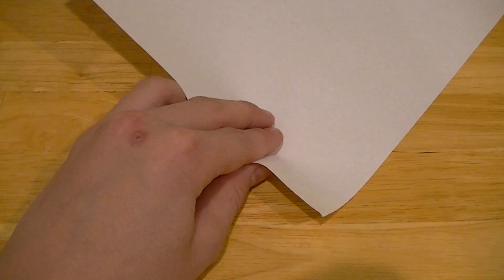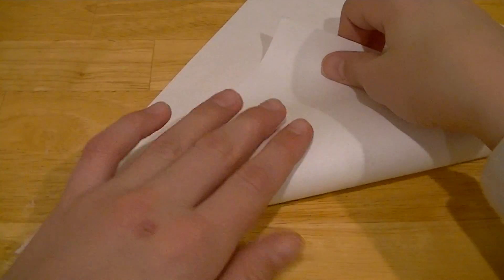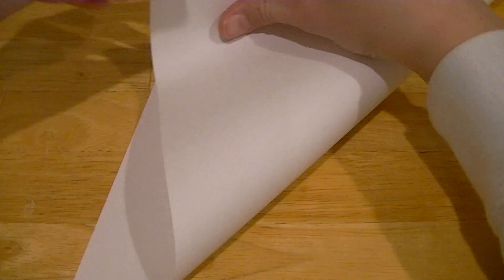So to begin, you take a rectangle piece of paper and then you take the point right here and fold it down to this edge.